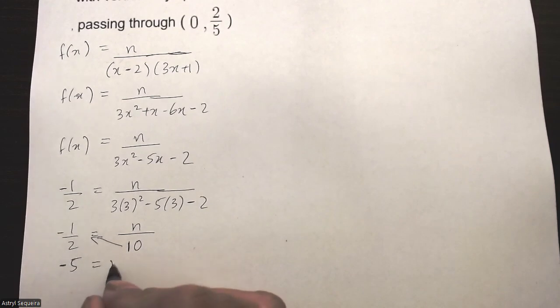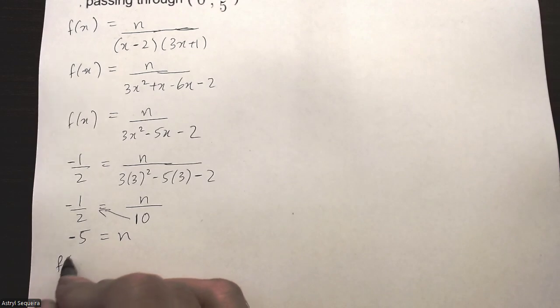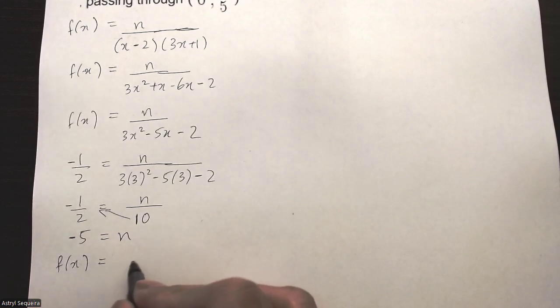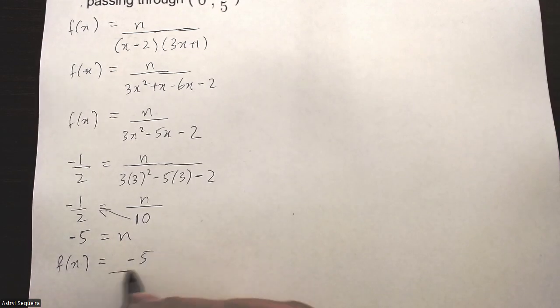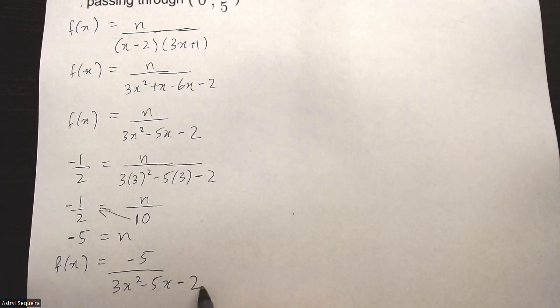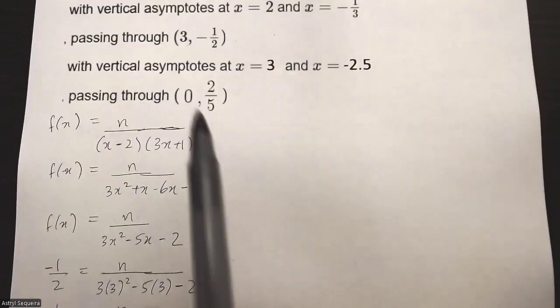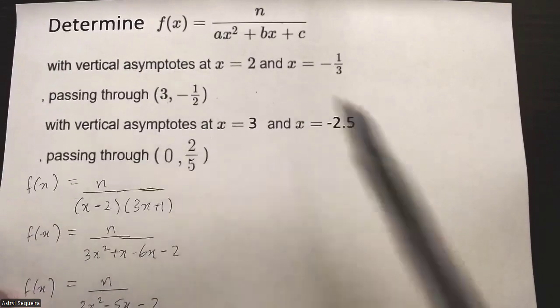So negative 1/2 times 10 is just negative 5, so negative 5 equals n. Now I can rewrite my formula: f(x) equals negative 5 over 3x squared minus 5x minus 2. And that's the solution to the first question right over there.